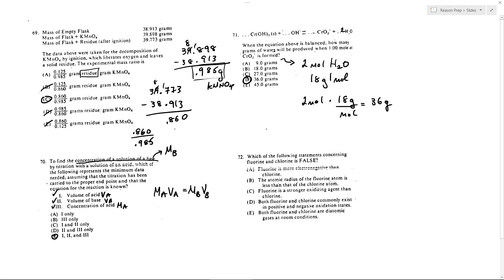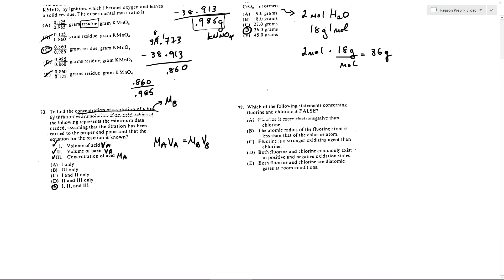Which of the following statements concerning fluorine and chlorine is false? So fluorine is more electronegative than chlorine. That is true. Fluorine is the most electronegative. And so that is true. We can get rid of A.